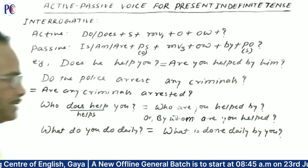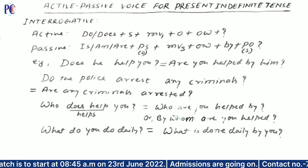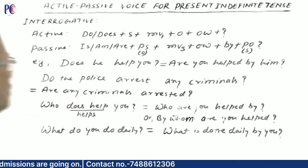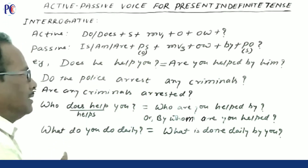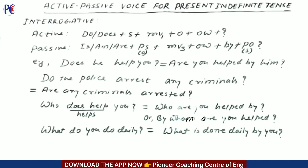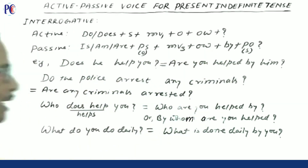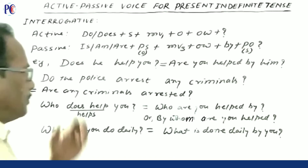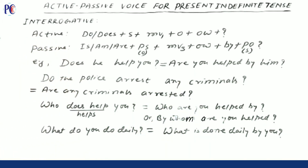Now the next one is interrogative — the passive of interrogative present indefinite sentences. The active structure is: Do/Does plus subject plus main verb one plus object plus other words. For example: 'Does he help you?' The passive subject is 'you', and 'he does' uses 'are' accordingly. So: 'Are you helped by him?'